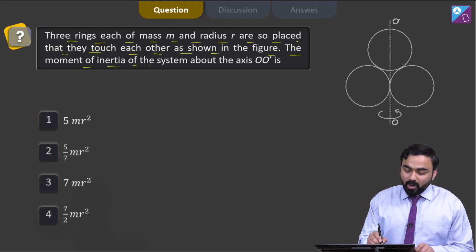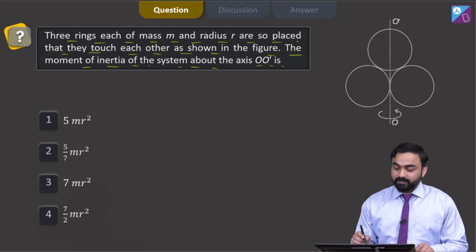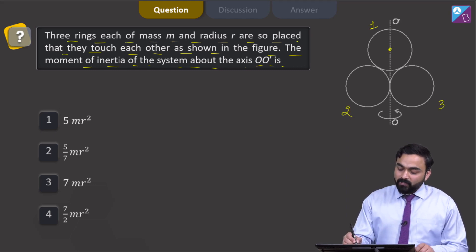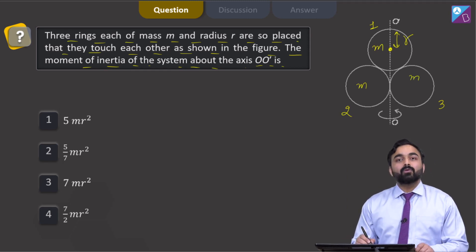The moment of inertia of the system about the axis OO' is what we need to find. Let this ring be ring number 1, this be 2, and this is 3. The radius of each ring is r and the mass of each ring is m.